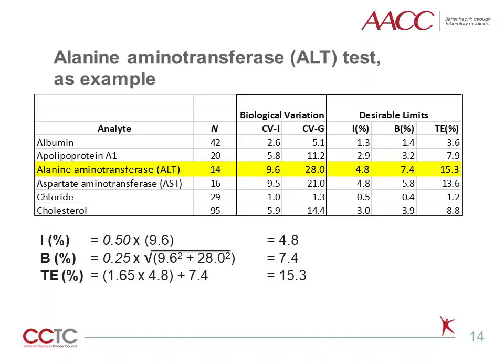Using the alanine aminotransferase (ALT) test as an example: the CVI and CVG estimates for ALT are based on 14 total publications. To get desirable limits for imprecision, we take 50% of CVI, or 9.6, which gives 4.8% for desirable imprecision. For bias, we use the 0.25 factor times the sum of variances of CVI and CVG — that is 9.6 squared plus 28 squared — giving a final result of 7.4%. Total method error equals 1.65 times the imprecision limit of 4.8% plus 7.4% bias, giving a final value of 15.3%.